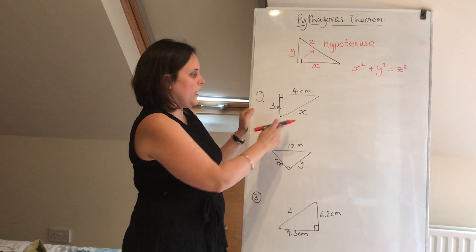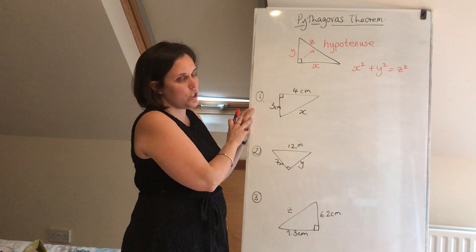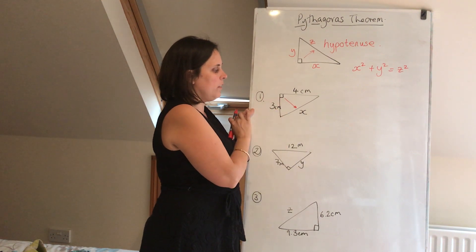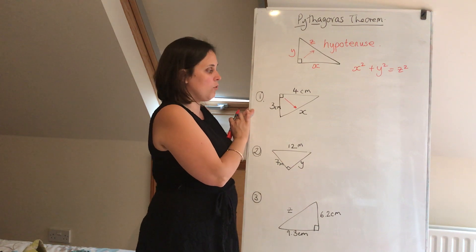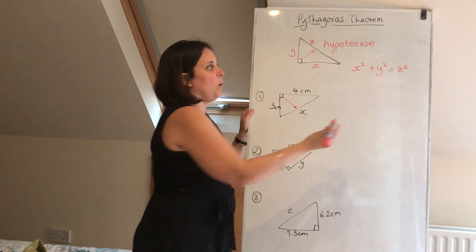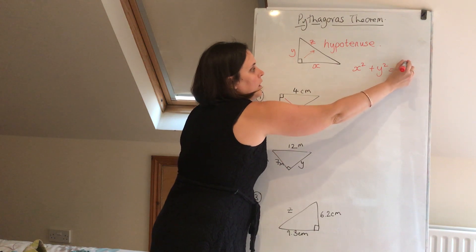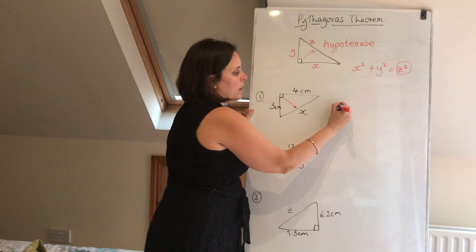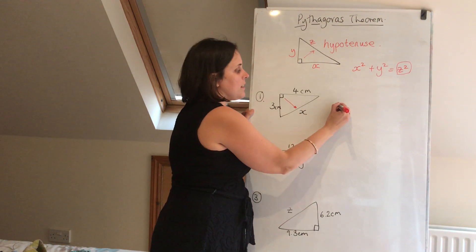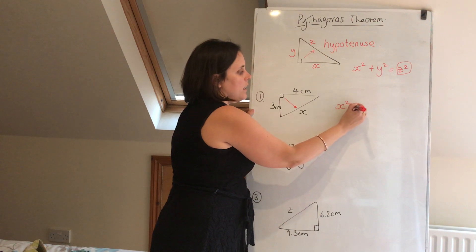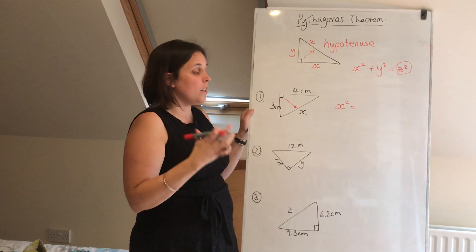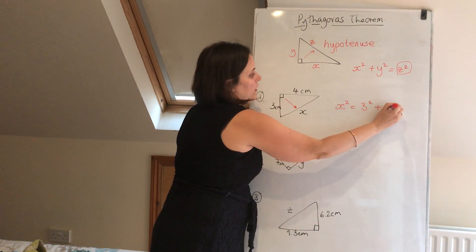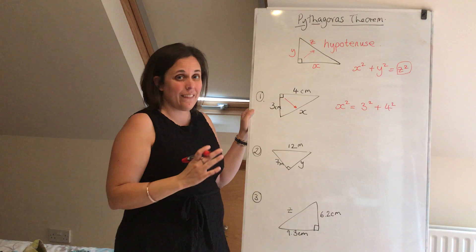So the first one we've got here, I want to find side x. The first thing you've got to do is identify that hypotenuse. So there we have, the hypotenuse is opposite to the right angle. Now the hypotenuse is the one that's going to be equal to the other two sides. So we can say that x squared is equal to the sum of the other two squared and added together. So we just write x squared equals three squared plus four squared. And that is it.